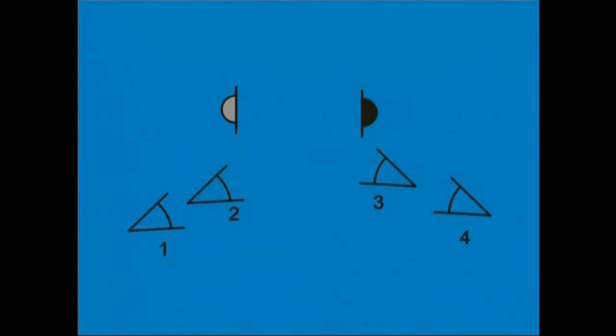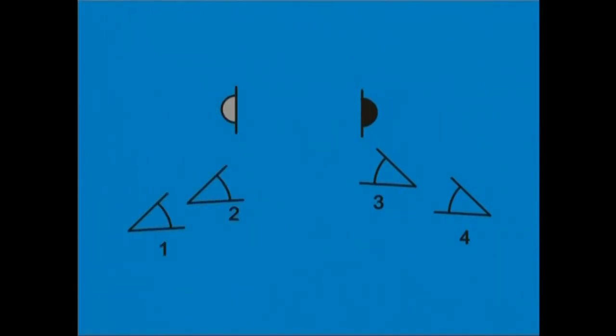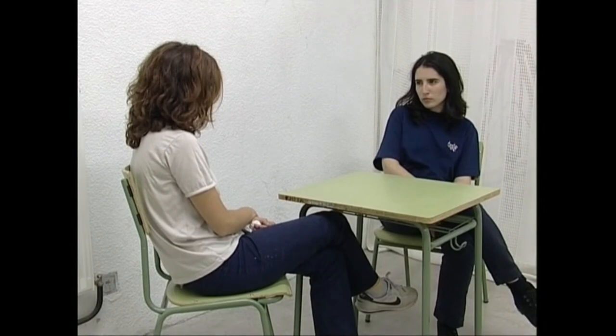Ezkena, honako ordenari jarraikiz muntatuko dugu: bat, lau, bi, hiru. Egin dugun muntaian, plano irekietatik lehen planoetara jo dugu. Baina munta genezakeen plano irekiak eta lehen planoak txandakatuz ere. Muntatzerakoan, orden honi jarraituko diogu: bat, hiru, bi, lau.